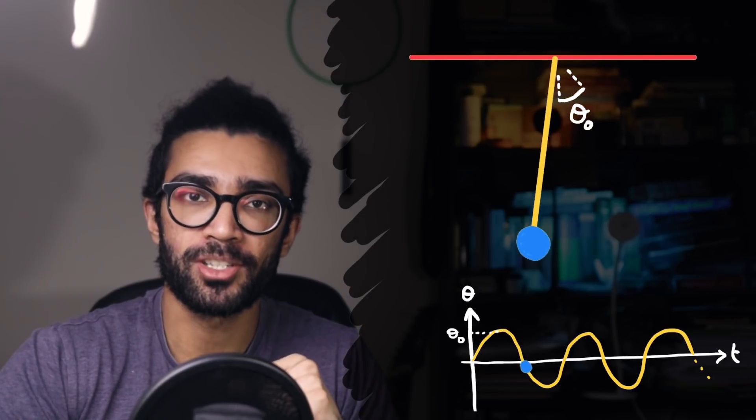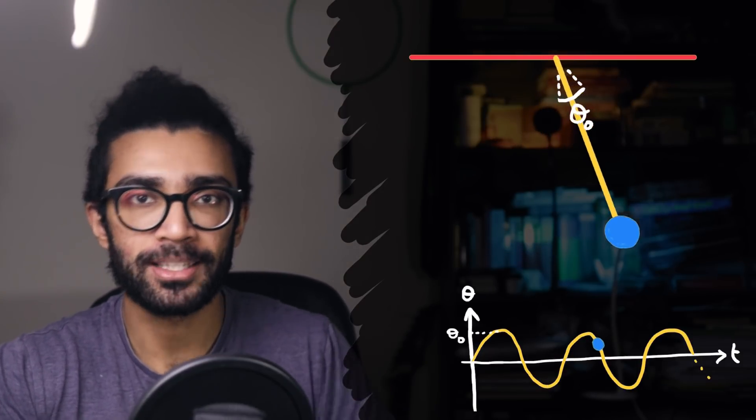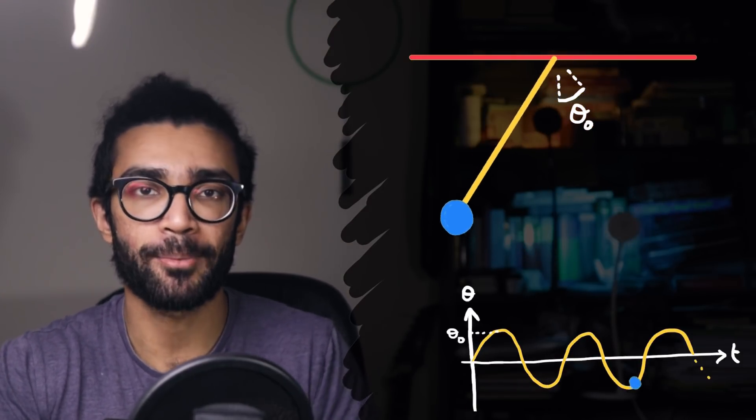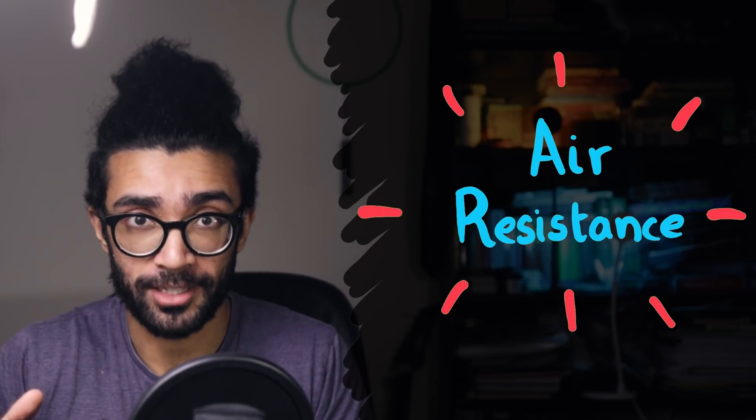So, we found for this particular pendulum, when there's no air resistance, this pendulum will continue to oscillate back and forth, back and forth, with exactly the same amplitude, forever. But hold on, what's this? Air resistance has entered the chat. How are we going to account for this mathematically?